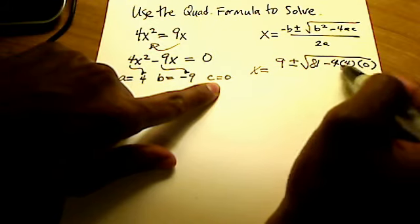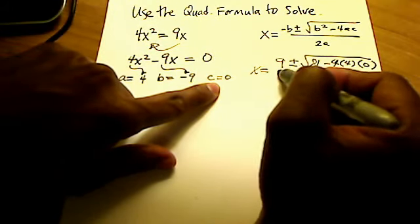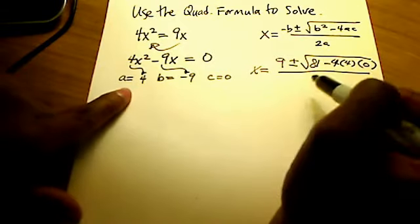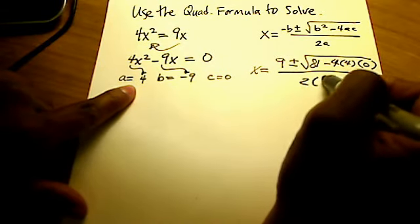Now that's going to pose something fun there. We're going to come back to that in a second. All over 2 times a. Well, my a is a 4, so it's 2 times 4.